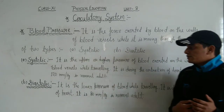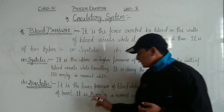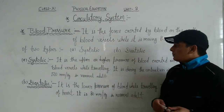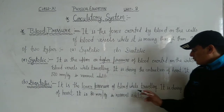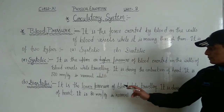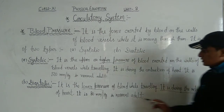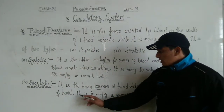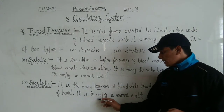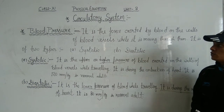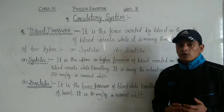Diastolic pressure is the lower pressure of blood while traveling through vessels. It occurs during the relaxation of the heart. The normal diastolic pressure is 80 mmHg. So this covers blood pressure — I hope you understood about the circulatory system.